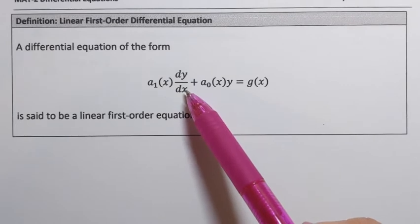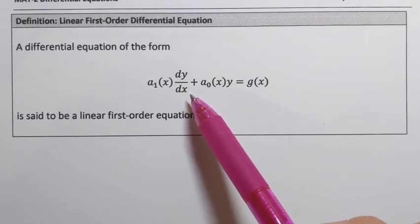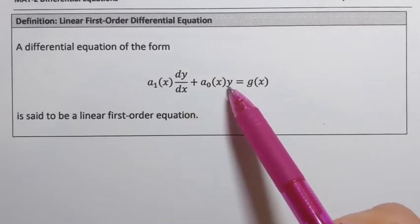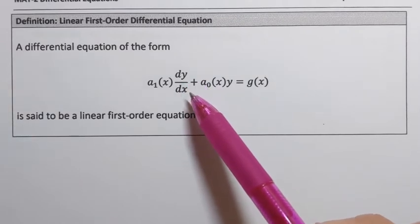Let's refresh what it means for an equation to be a linear differential equation. There are two conditions that have to be satisfied. The first one is that y, the dependent variable, and all its derivatives should be raised to the first power. As we can see here, y itself is raised to the first power and the derivative dy/dx is raised to the first power.